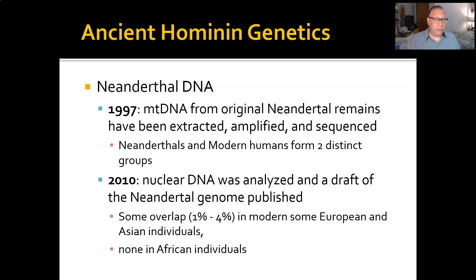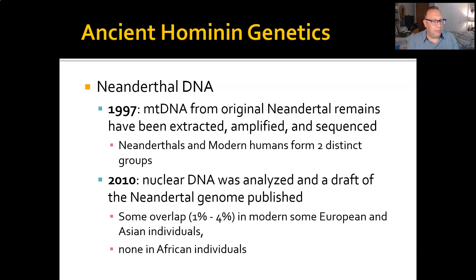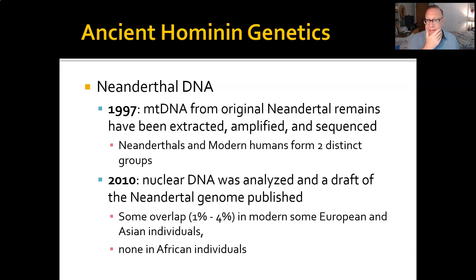In 2009 the genome was published, and in 2010 analysis of the full Neanderthal genome revealed considerable overlap in nuclear DNA. European and Asian individuals—anyone with ancestry not from Africa—have between 1 and 4 percent Neanderthal DNA in their genome, while African individuals have none. This is strong evidence that mating events occurred between Homo sapiens who arrived in Europe and elsewhere and the Neanderthals.